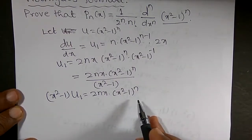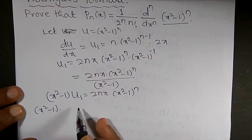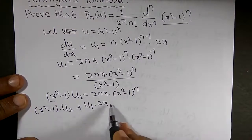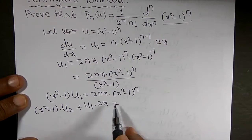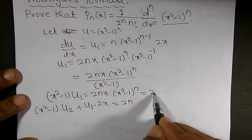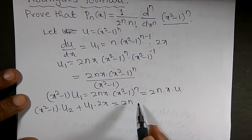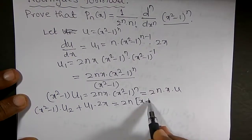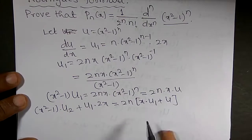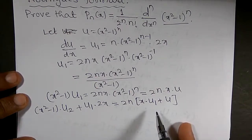Now I want to differentiate this equation one more time, using the product formula. Keeping x squared minus 1, the derivative gives (x² - 1)·u₂ + u₁·(2x) = 2n times [x·u₁ + u], where 2n is constant. So this becomes (x² - 1)·u₂ + 2x·u₁ = 2n(x·u₁ + u). Now I want to differentiate this equation n times, using the Leibniz formula.